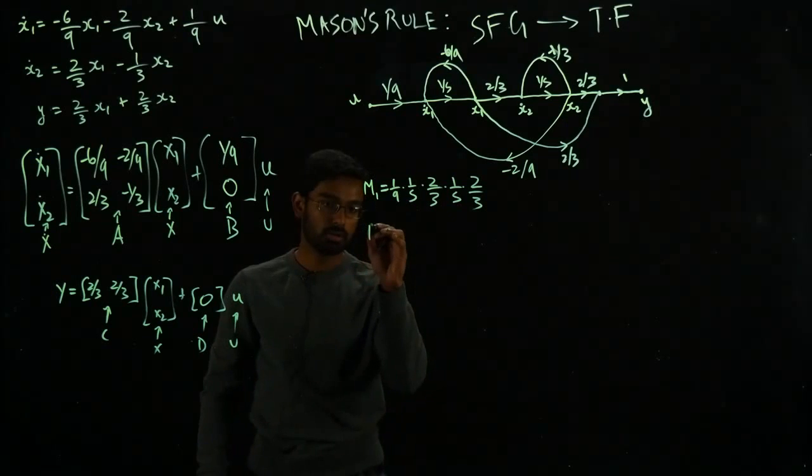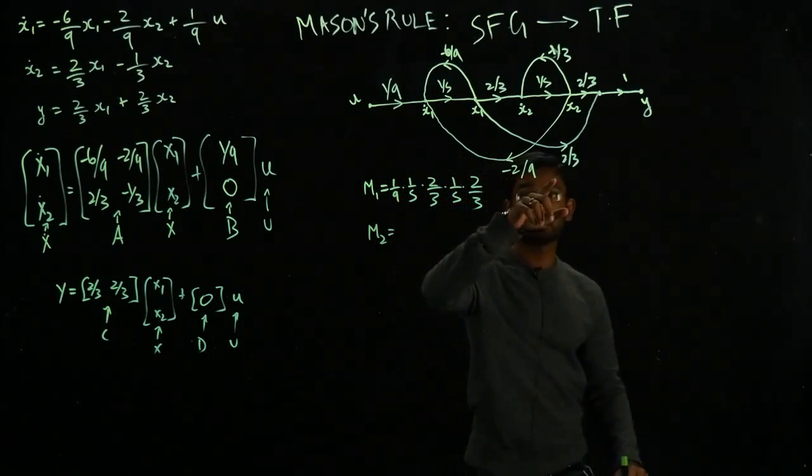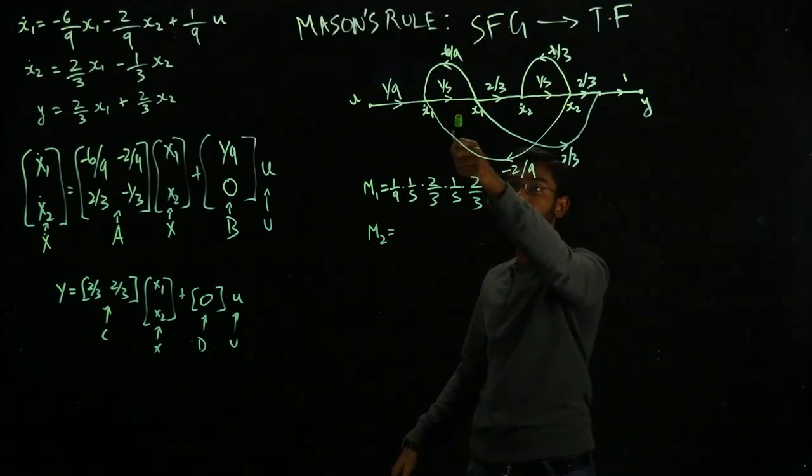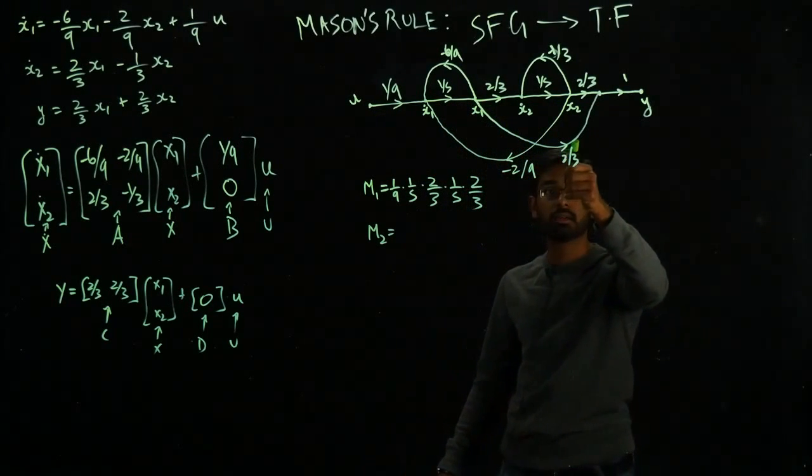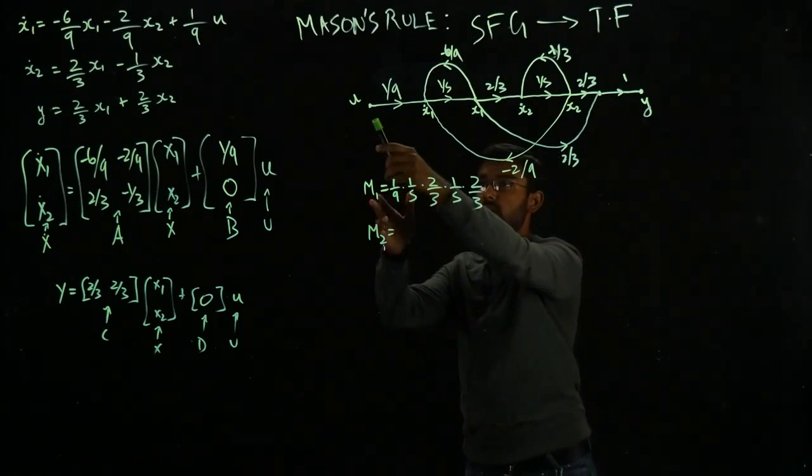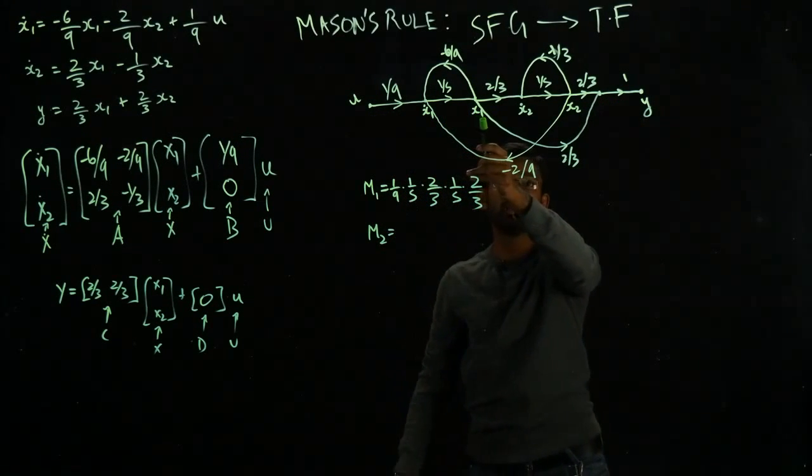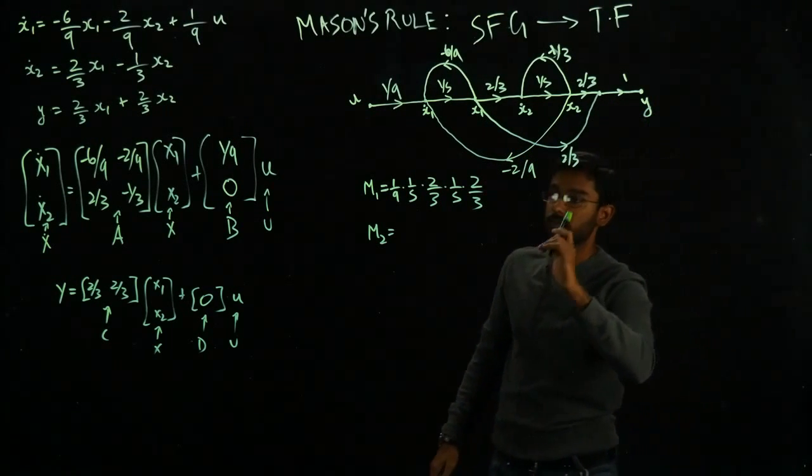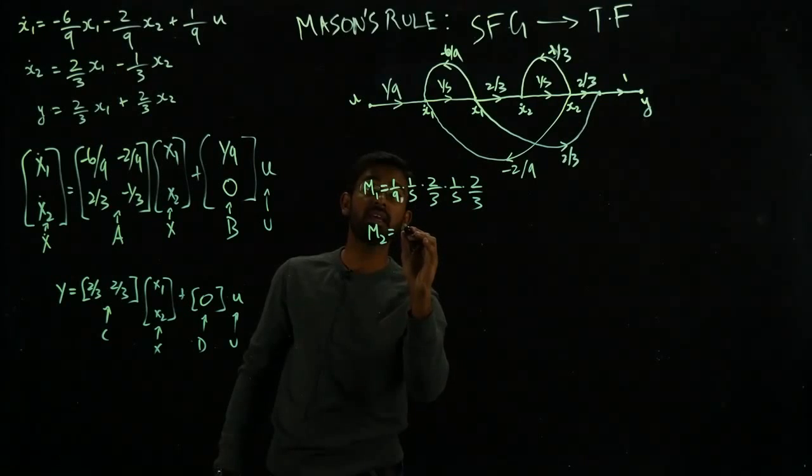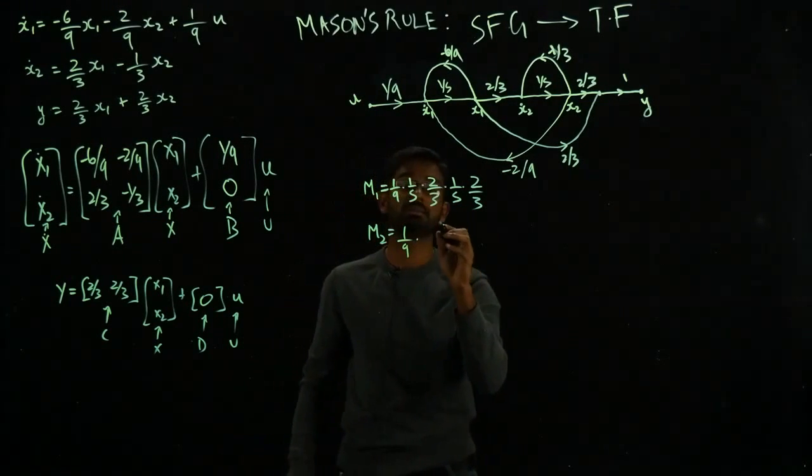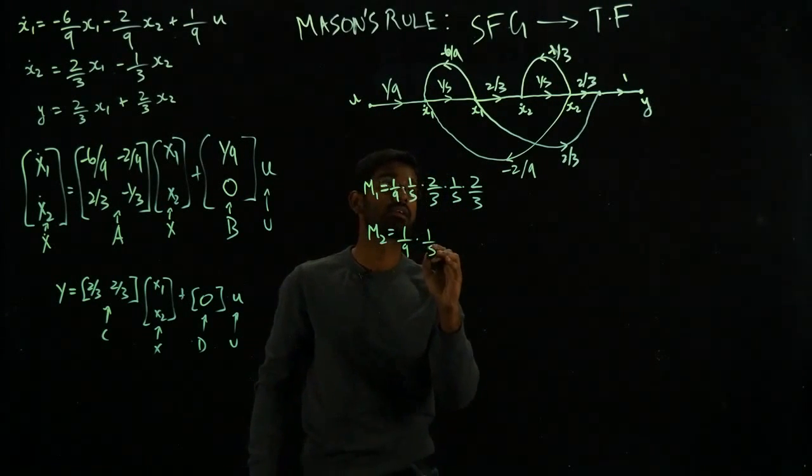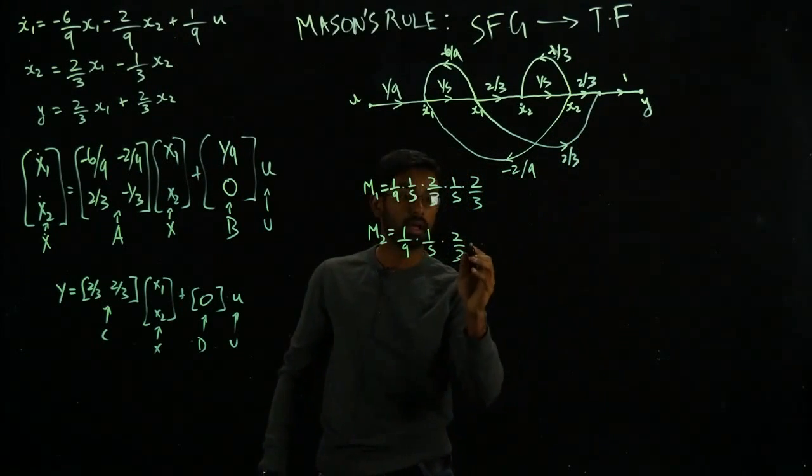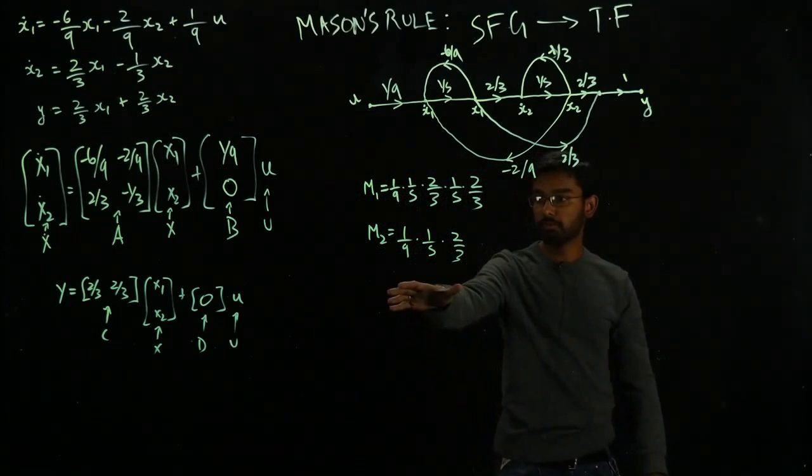What about the second one? There is a second one. As you can see, all these are feedback loops. They will contribute to a loop. We will talk about loops in a bit. But you can also reach Y via this path. Starting from U, hit X1 dot, X1, and then skip these two states and go directly to Y. Which means that gives rise to the second path. I'm going to write that as 1 over 9 times 1 over S times 2 over 3, which is this 2 over 3 right here, and that's it times 1. So that would be my second M2.